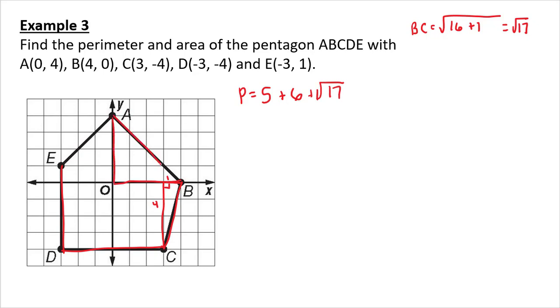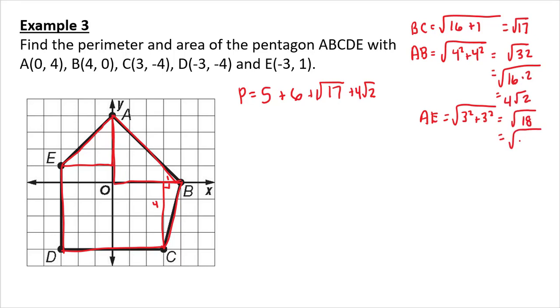Now, we have this side where AB is the square root of 4 squared plus 4 squared, which ends up being root 32, breaking that down. That is 16 times 2, which is 4 root 2. So, I have a 4 root 2 in there. Then I have side AE. Side AE is 3 squared plus 3 squared. That's going to be root 18. 18 can be broken down into 9 times 2. 3 root 2.